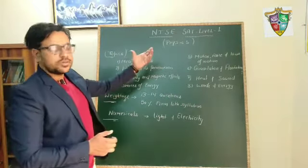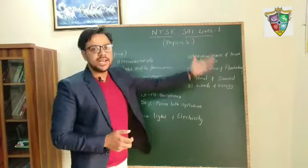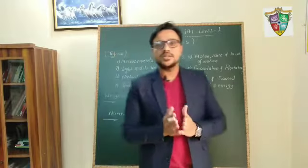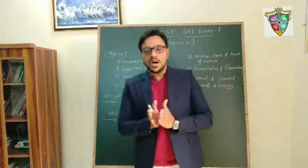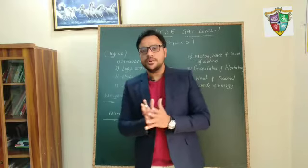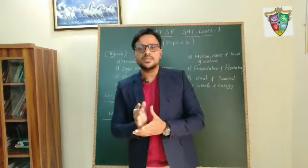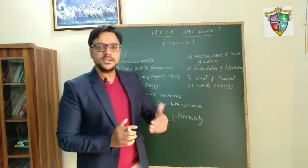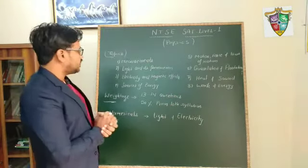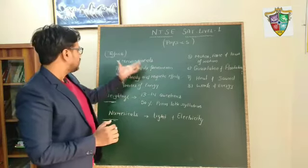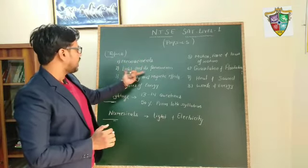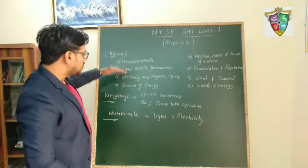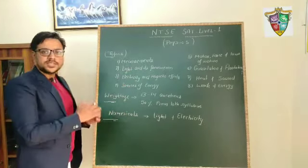In the Physics part for the NTSE Stage 1 Level 1 exam, 13 to 14 questions are asked. Out of these 13 to 14 questions, 50% are asked from the 10th class level, and the rest are from 9th class, 8th, and 7th. The topics from 10th class are: measurement, light and its phenomena, electricity and magnetic effect, and source of energy — these 4 chapters are from class 10th level.